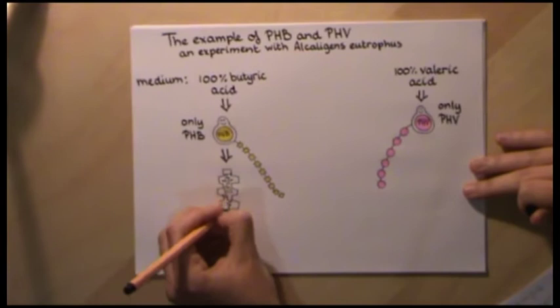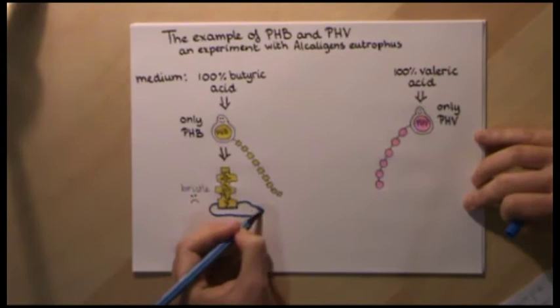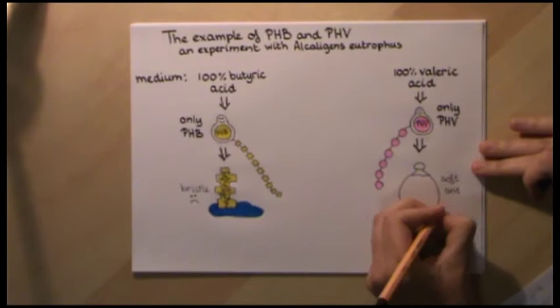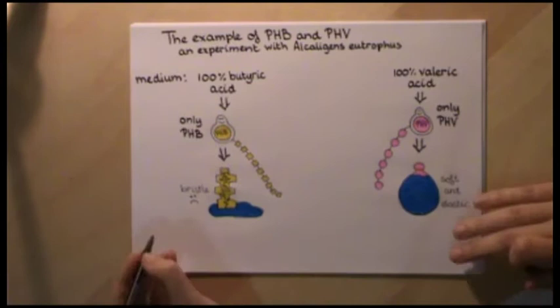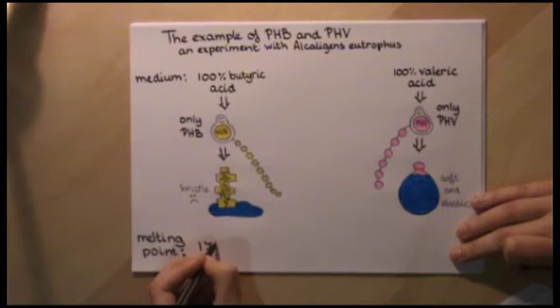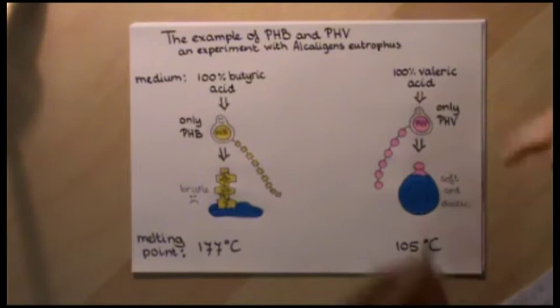The extracted PHB polymer exhibited brittleness, while the extracted PHV polymer appeared to be more elastic and softer. Also, PHB had a much higher melting point than PHV. So, the carbon source influences the PHA being formed.